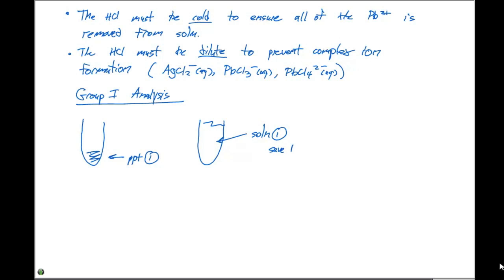We're gonna save this for a later test. And I should point out that the unknown you're gonna get in your particular experiment only contains group one, group two, and group three cations. So this solution number one contains cations that are in group two and group three. Our precipitate down here is gonna contain our group one cations.